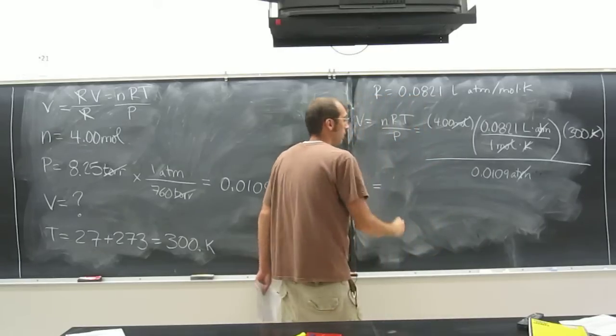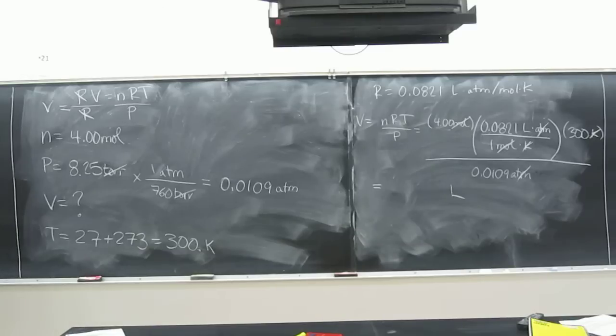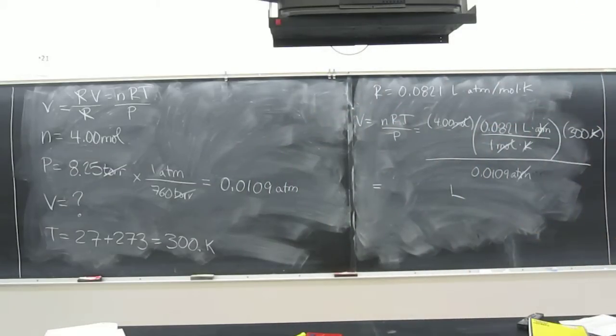Is liters a good volume unit? Yeah. So we've done it right. If you get your units right, you know you've done it right. Then you've got to plug everything into the calculator. So 4 times 0.0821 times 300, all divided by 0.010.